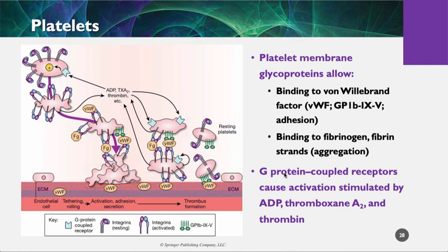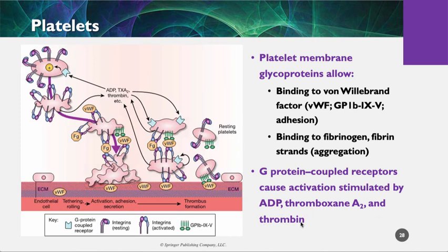There are G protein-coupled receptors — specifically the ADP receptor on the platelet and the thromboxane A2 receptor on the platelet — and thrombin as well. If you remember back in pharmacology, ADP receptors can be targeted with Plavix, for instance. Thromboxane A2 receptors are targeted by aspirin. So we have the ability to interfere with this platelet aggregation through different areas. Thrombin can be targeted with cath lab drugs like ReoPro and Integrilin — the glycoprotein 2B3A inhibitors that hit the GP2B3A receptor.